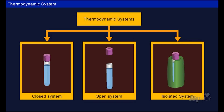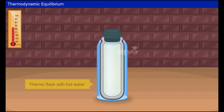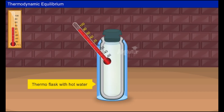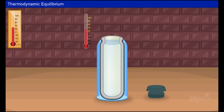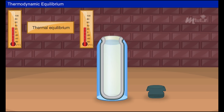Now let us discuss thermal equilibrium. Consider a thermal flask with hot water inside. When its lid is opened, heat transfers from the flask to the surroundings, and after some time the temperatures of the system and the surroundings become uniform. We can say that the system is in thermal equilibrium.